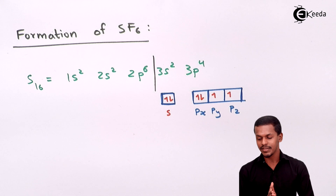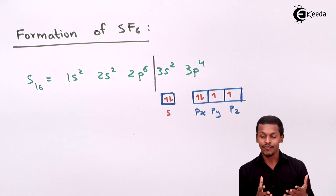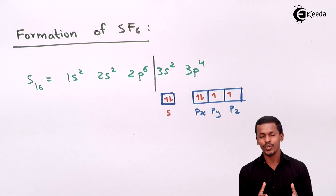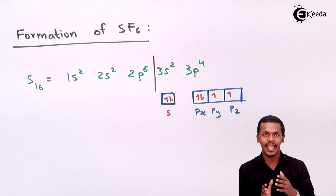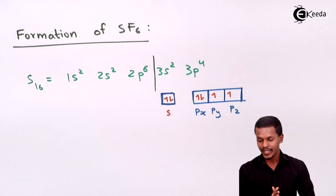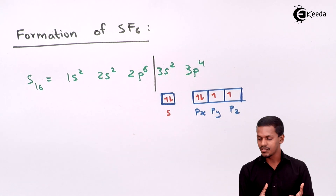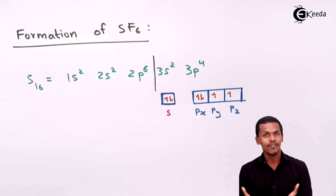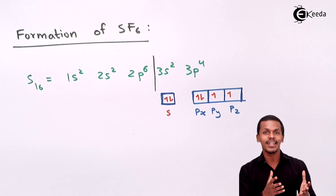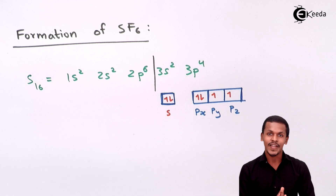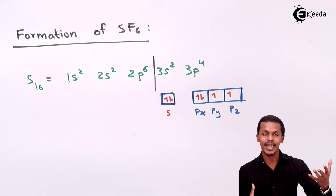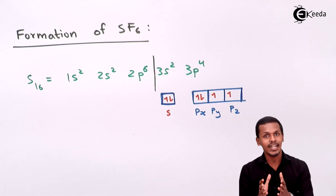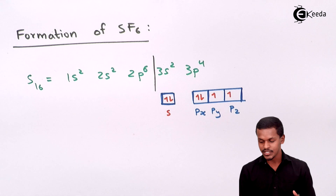Sulfur forms bonds with fluorine, but fluorine can only form a single bond — it cannot form double or multiple bonds. Looking at the unpaired electrons in the ground state, there are only two, meaning sulfur would only combine with two fluorines to form SF2. But we need SF6, so something must be done to generate more unpaired electrons for bonding. This ground state configuration must be changed.